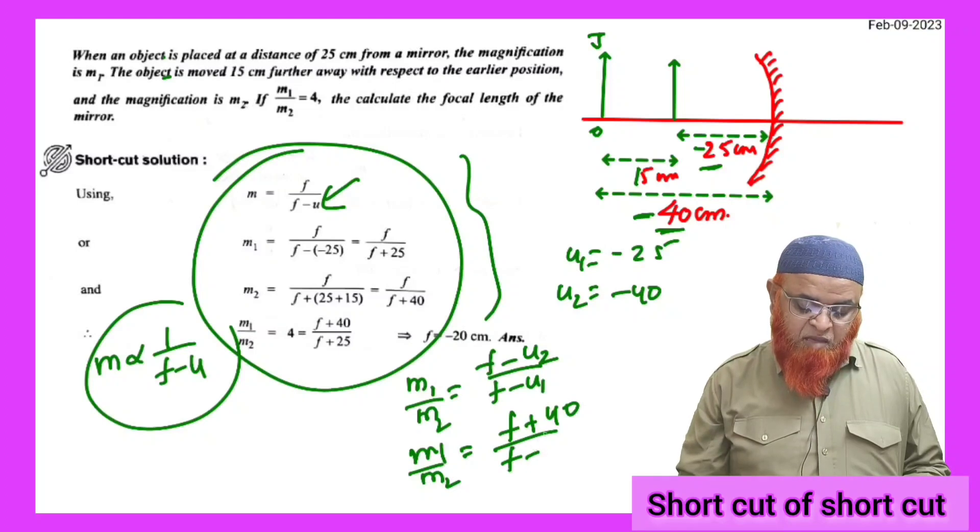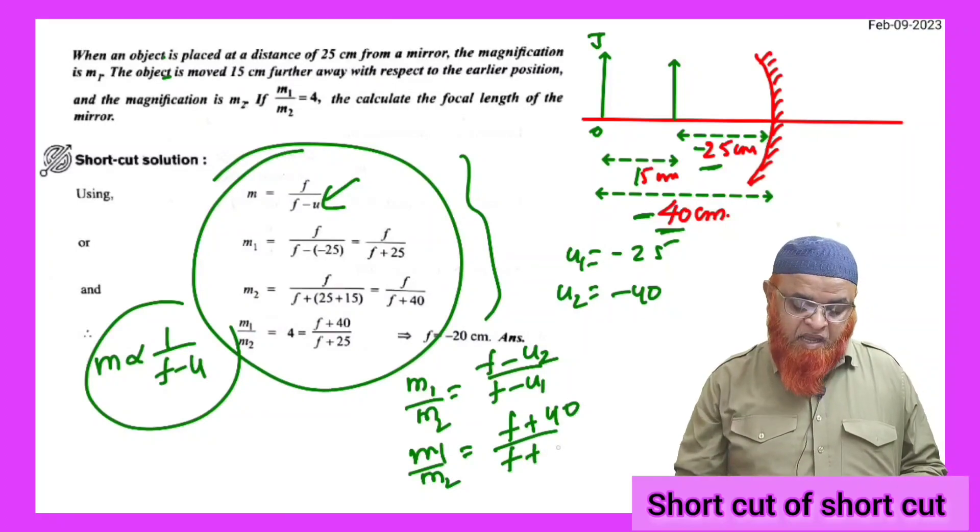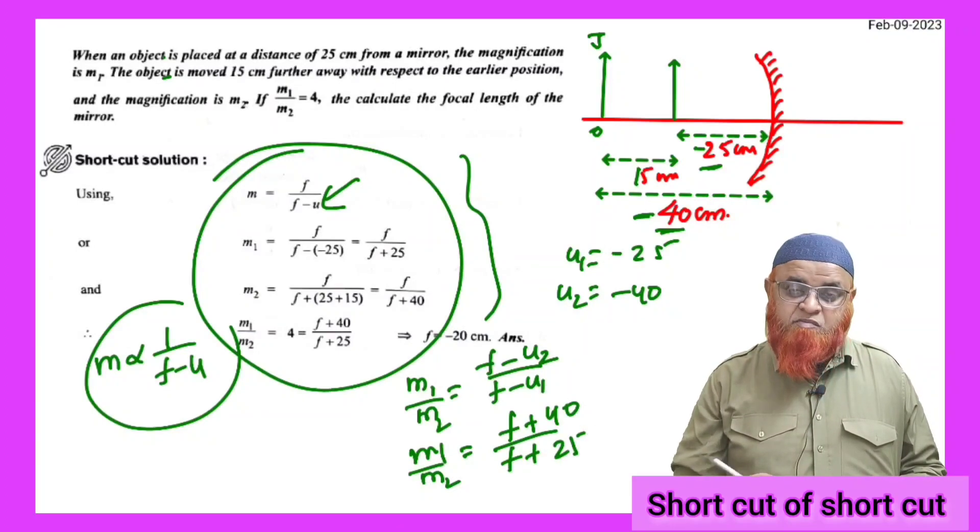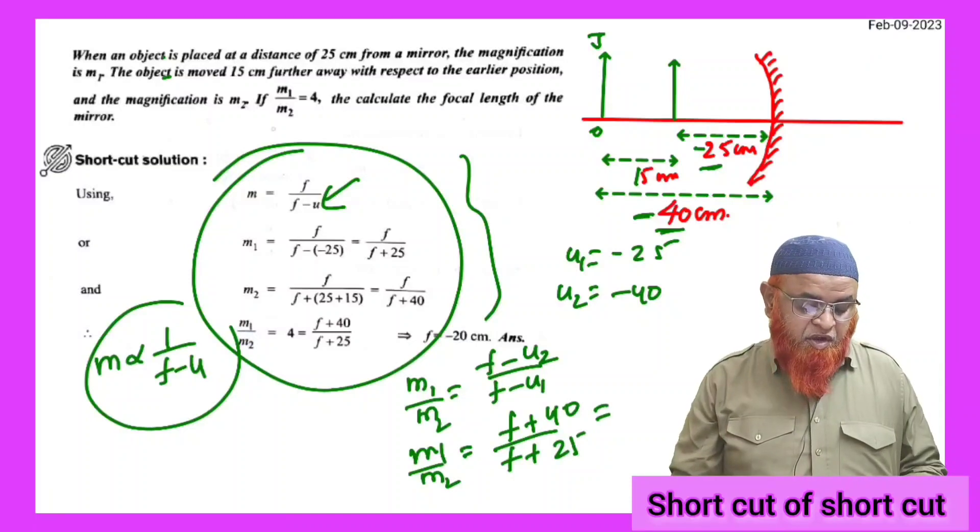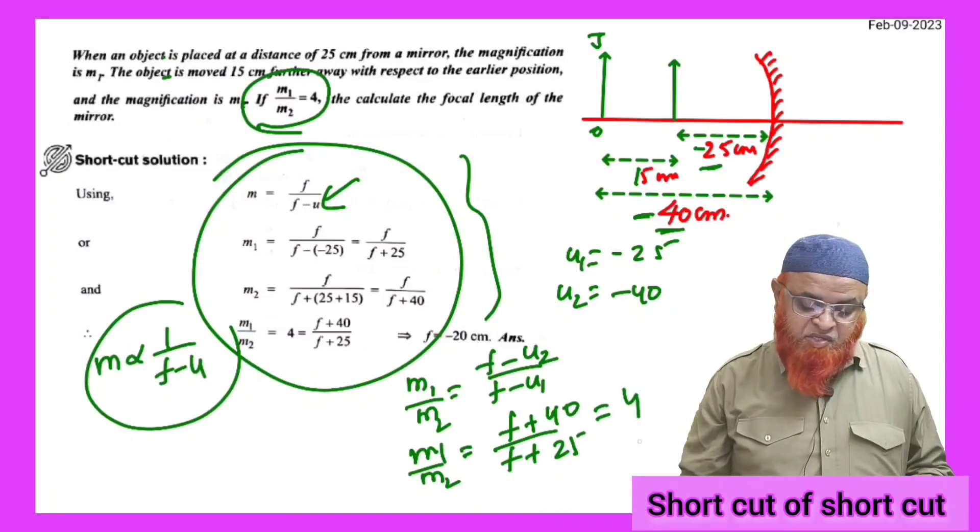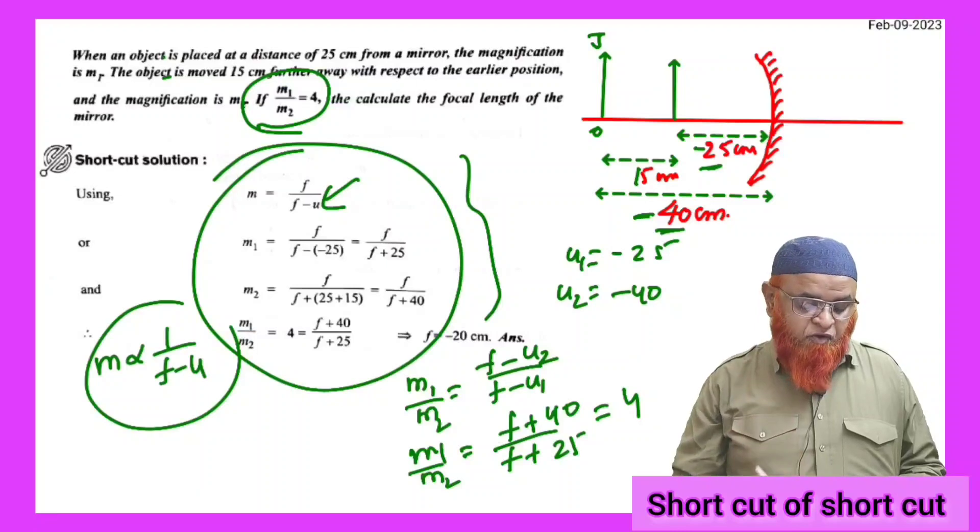That is M1 by M2 which is equal to F minus minus of minus 40 is going to be plus 40. F plus 40 by F plus 25 because minus of minus is plus, which is going to be given as M1 by M2 is taken as 4 here. You just keep 4 here directly.